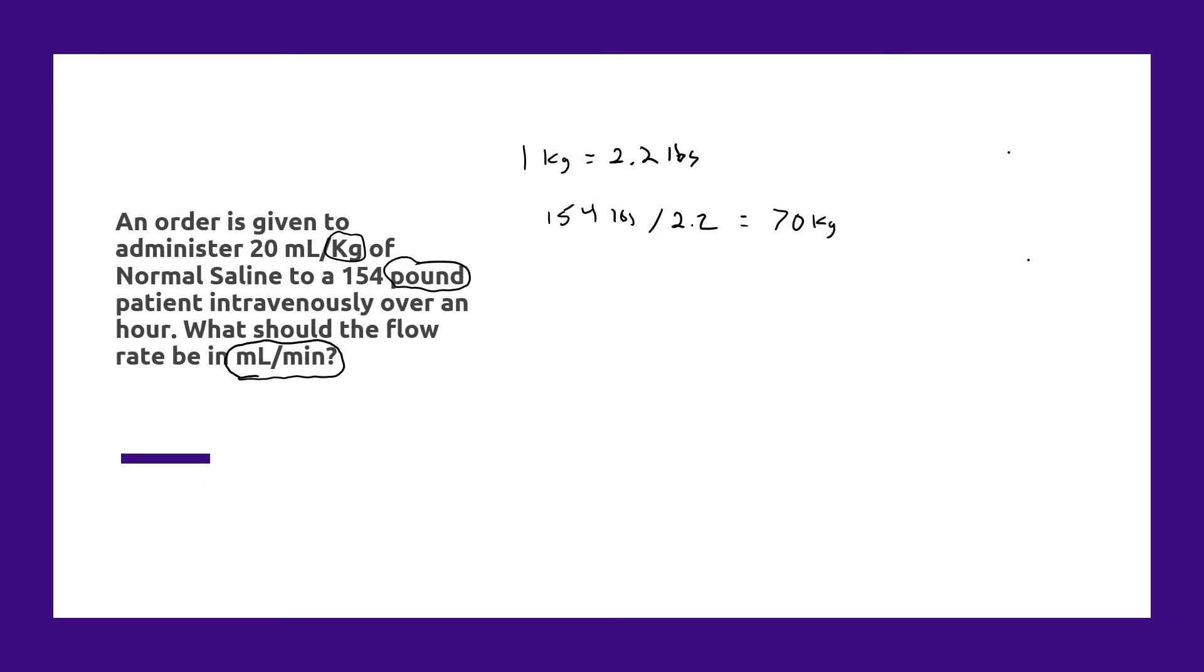Now we know the dose is 20 milliliters per kilogram. So how many milliliters for a 70 kilogram patient? Again, we could do this simply, but just to illustrate a consistent method in setting up proportions, we want to know how many milliliters for a 70 kilogram patient if the dose we're being given is 20 milliliters per kilogram. I set this up where our unknown is in the numerator on the right, and our left is our known information with the units consistent in the numerator and denominator positions. So 20 milliliters divided by 1 kilogram times 70 kilograms is going to be 1,400 milliliters.